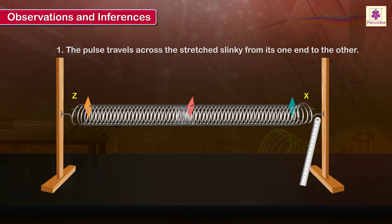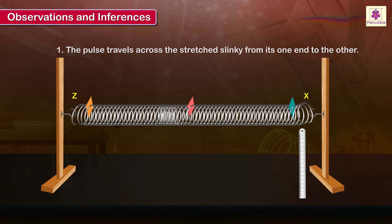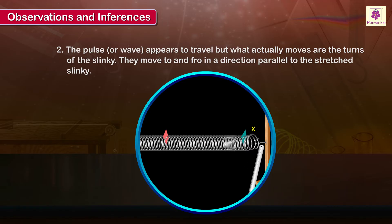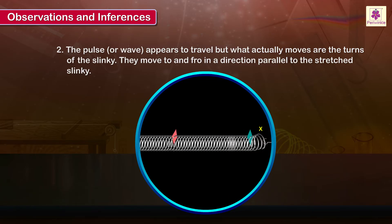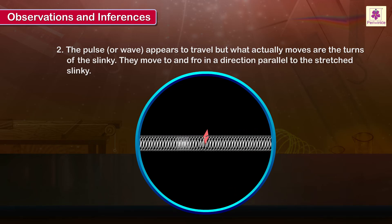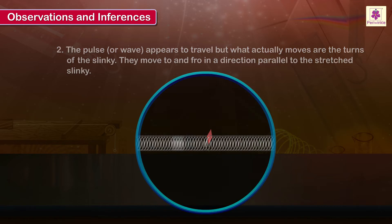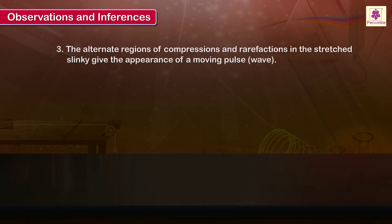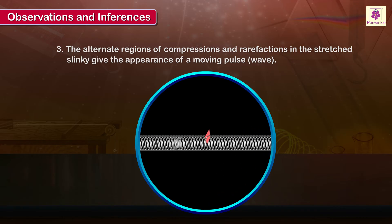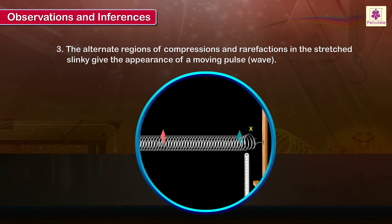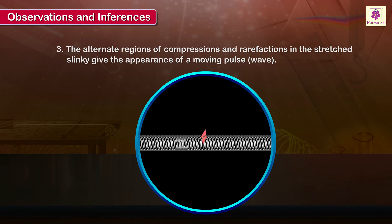Observations and inferences: The pulse travels across the stretched slinky from its one end to the other. The pulse or wave appears to travel, but what actually moves are the turns of the slinky. They move to and fro in a direction parallel to the stretched slinky. The alternate regions of compressions and rarefactions in the stretched slinky give the appearance of oscillations of a moving pulse.